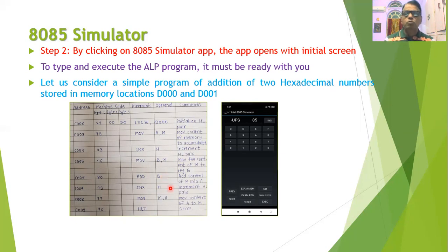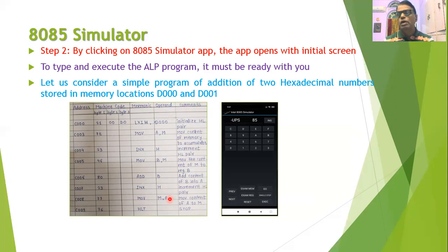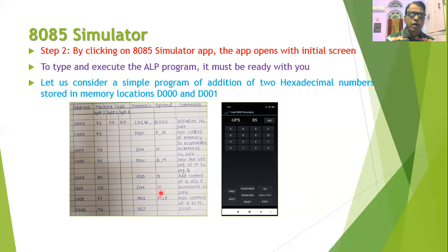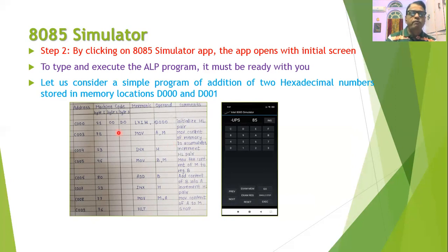Now the two numbers are added and the result is in the accumulator. We want to store this result at location D002. Therefore, we increment the HL pair using INX H, and then we move the content of the accumulator to the memory location pointed by the HL pair, that is, to location D002. Finally, since our job is complete, we will halt the program. Once you write such an ALP, you need to write the corresponding opcode for each and every instruction.